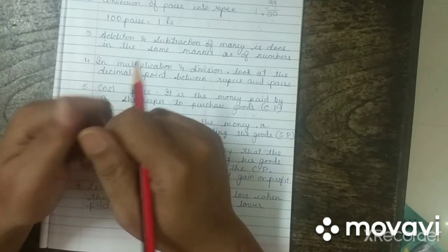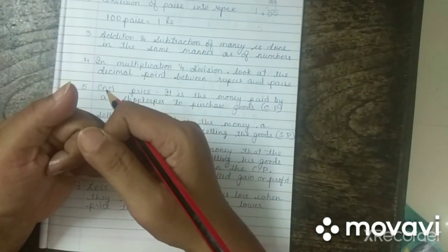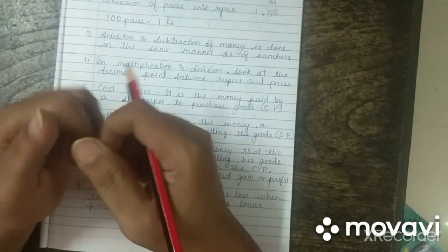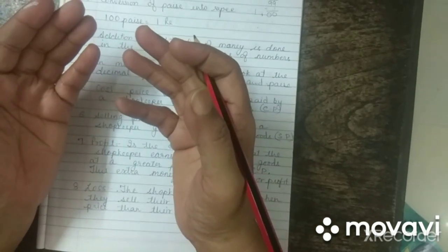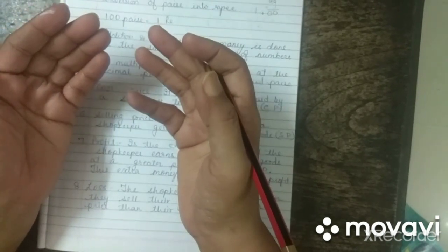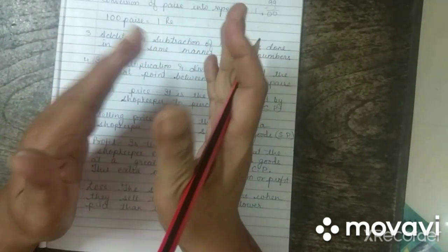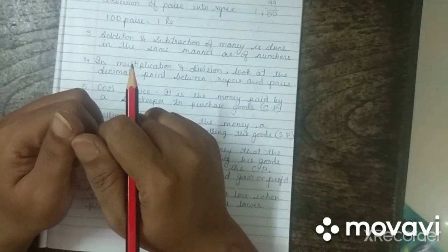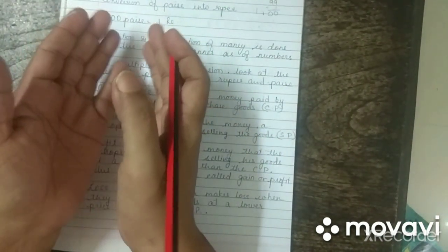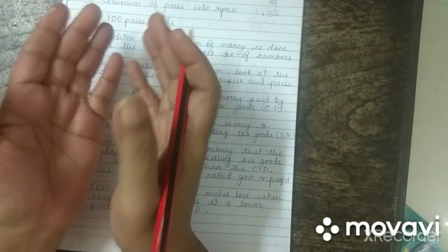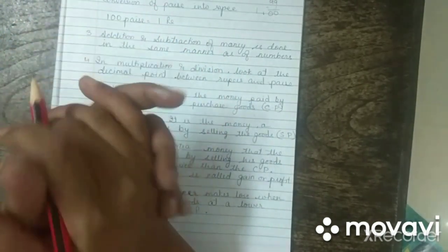The price that you pay to buy goods is called the cost price. The price at which you sell to customers is called the selling price. From the cost price and selling price, we calculate profit and loss. Profit is when the shopkeeper sells goods at a higher price than his cost price.